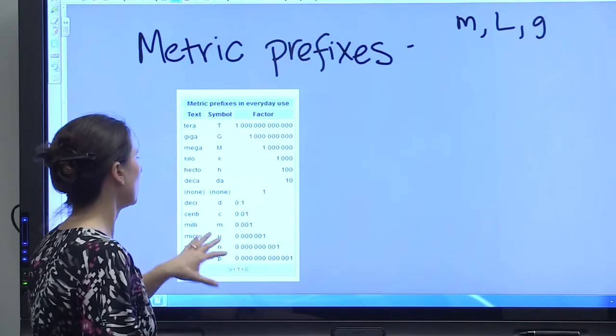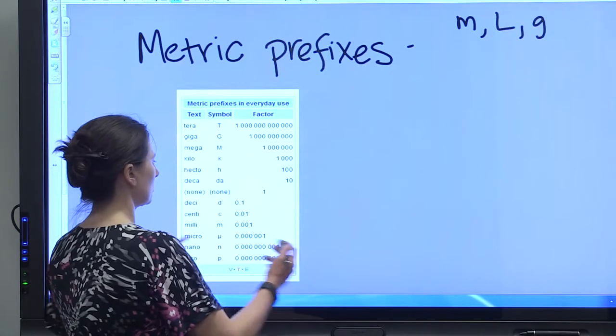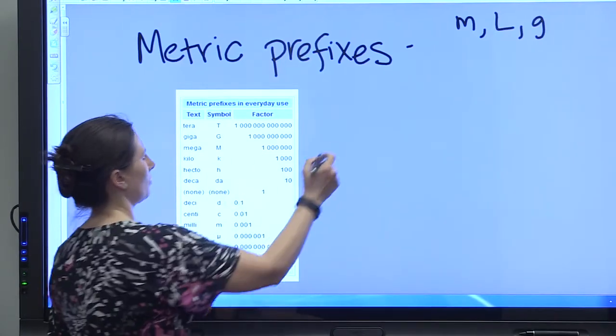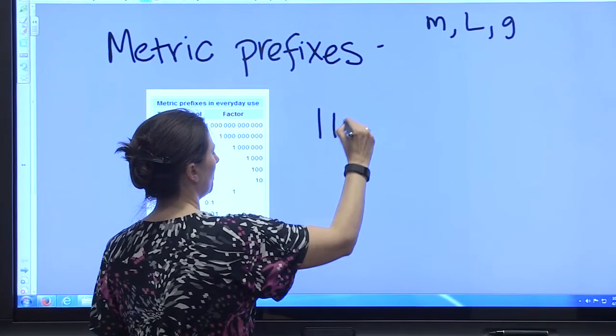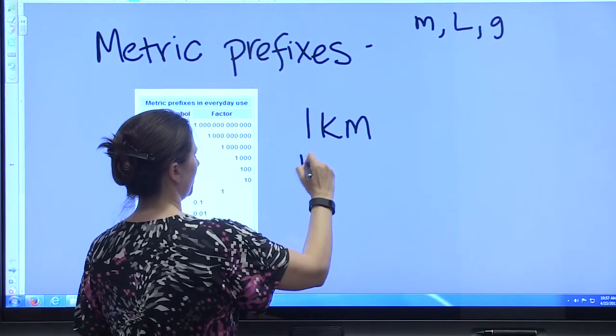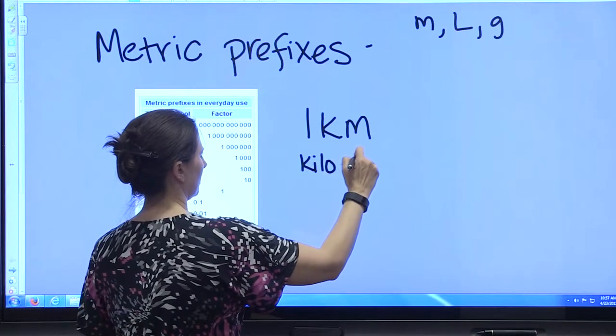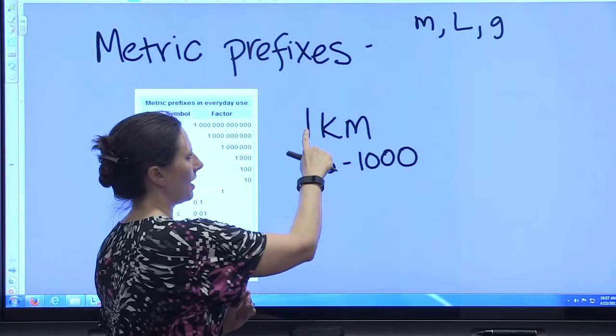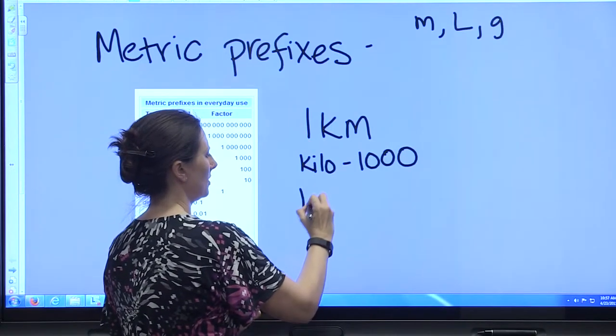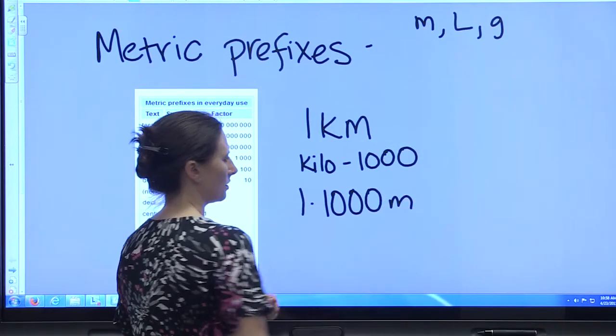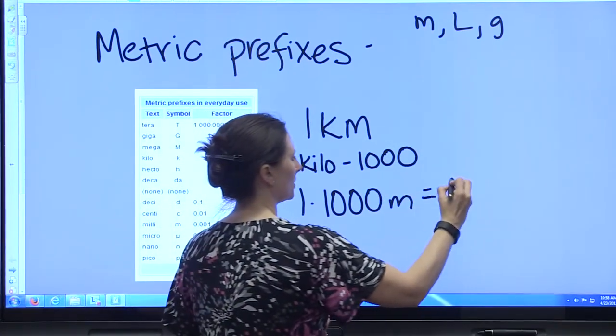They can also be used to make those calculations. So if you have one kilometer, kilo means a thousand, the factor is a thousand. So you have one times one thousand meters equals one kilometer.